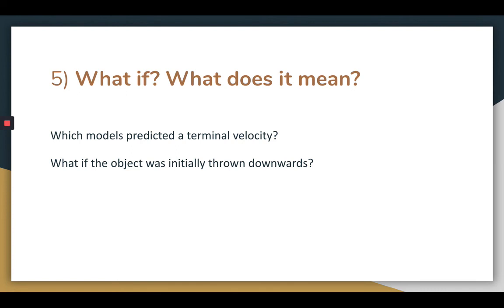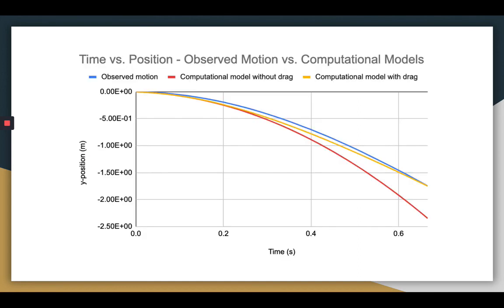So which of the models predicted a terminal velocity? Well, as discussed before, a terminal velocity is reached when the drag force is equal and opposite to the weight. Only the second model factored in the drag force and hence this is the only one that predicted a terminal velocity. In fact, on the graph, the yellow line does begin to somewhat flatten out and become increasingly linear, suggesting that the object is approaching its terminal velocity.